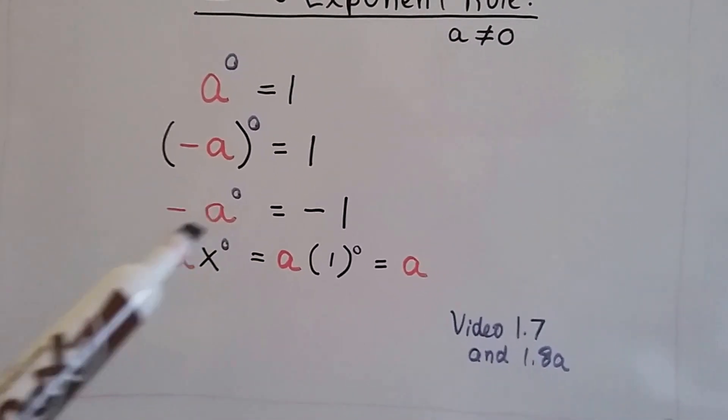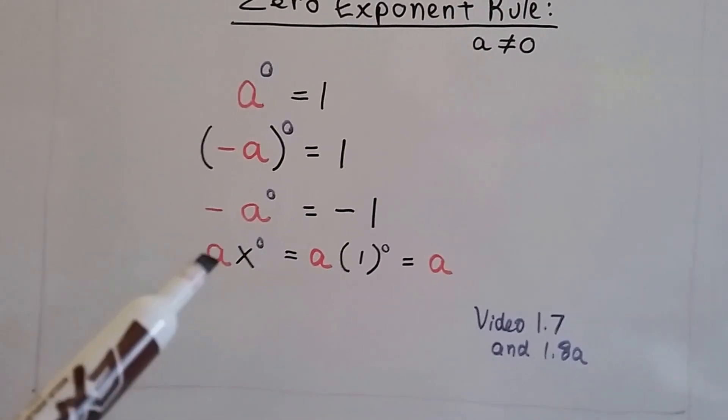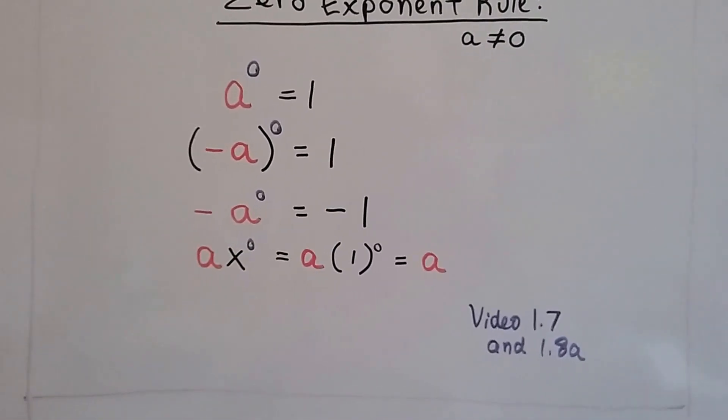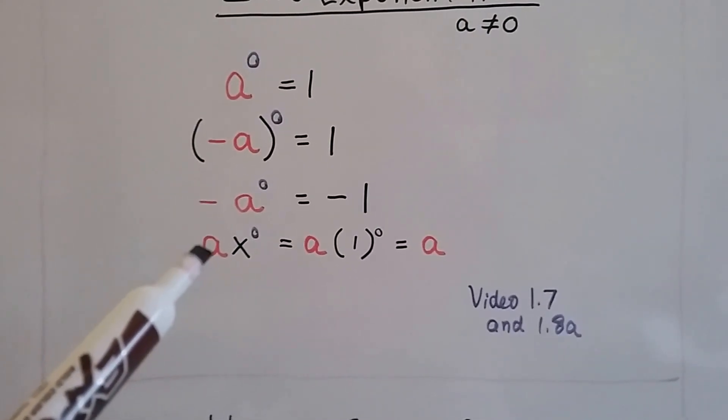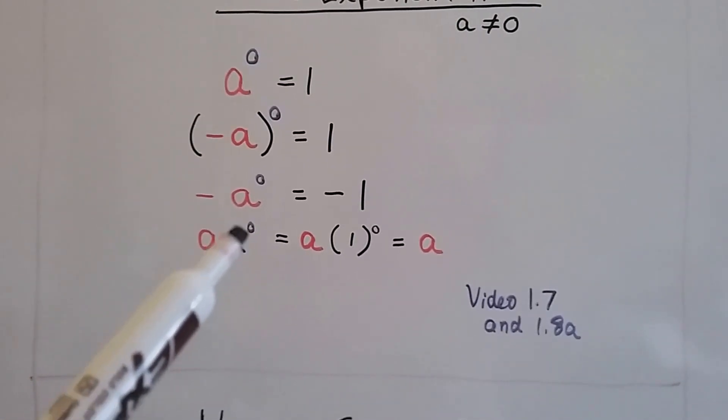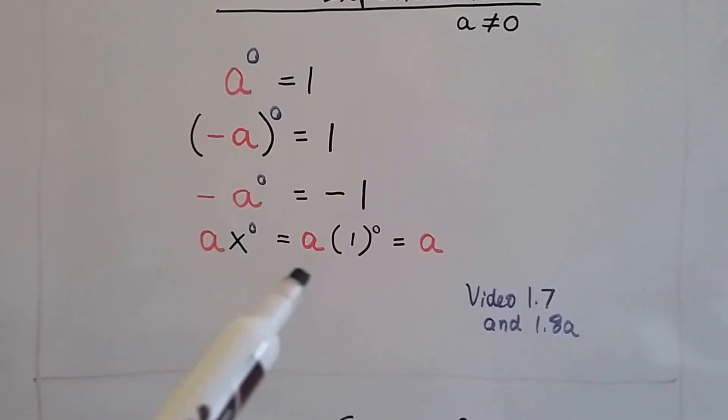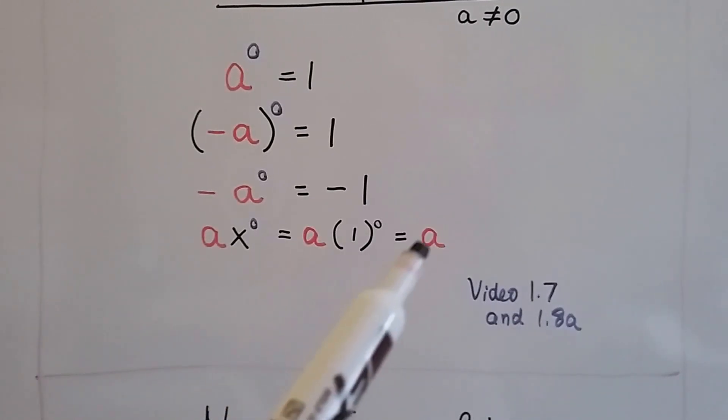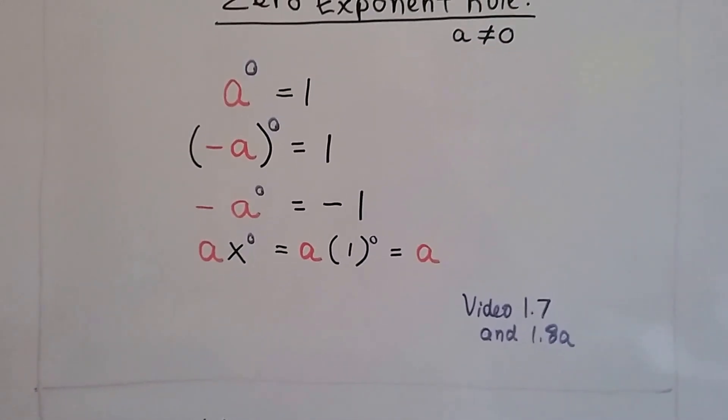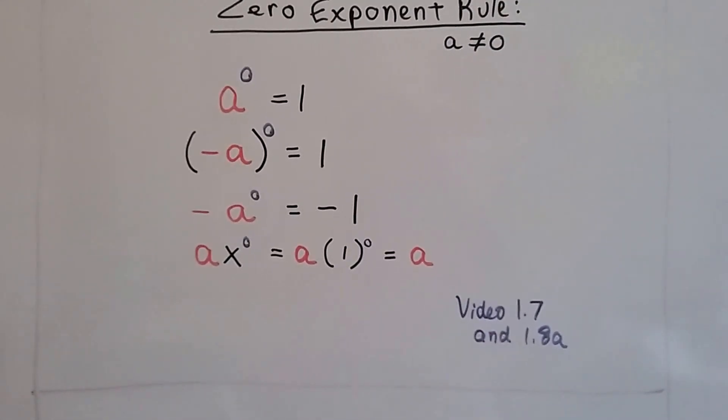When there's no parentheses, then this is going to be a negative 1. This zero is going to make that a negative 1. And if this is a coefficient and then there's a variable and an exponent of 0, then it makes the exponent a 1 and we have a times 1 or a. You can watch these videos to get more about this.